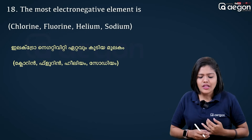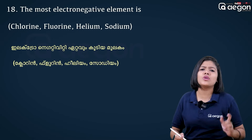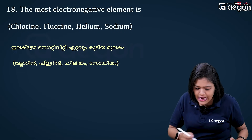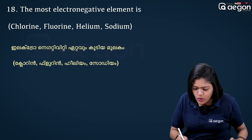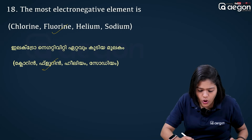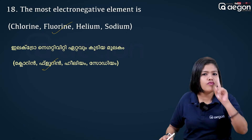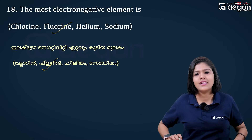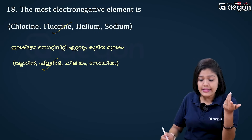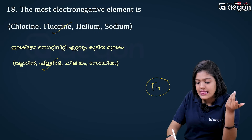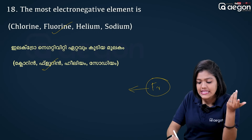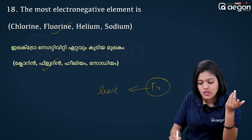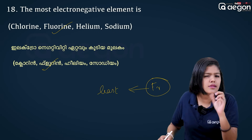The most electronegative element is Fluorine — it has the highest electronegativity. The least electronegative element is Francium. So Fluorine has the highest and Francium has the lowest electronegativity.